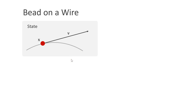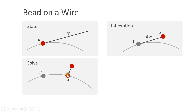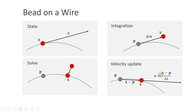Let us now start with a simple example: a bead on a wire. We looked into this problem already in tutorial number 5. We have a bead with position x and velocity v and we want it to stay on the wire. The first step is integration using an explicit Euler integration step — we multiply the velocity times the time step size and add it to the position. x is now the unconstrained position. Next, we solve the constraint by moving the bead to the closest position on the wire. Finally, we update the velocity as the current position minus the previous position divided by delta t. Position-based dynamics is an integrator and a solver at the same time.